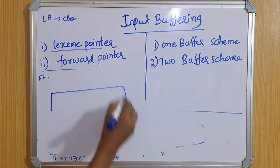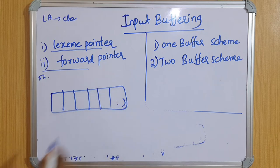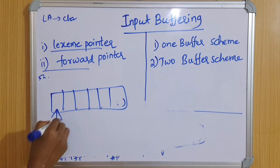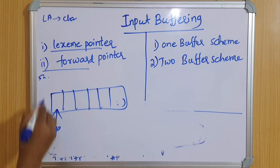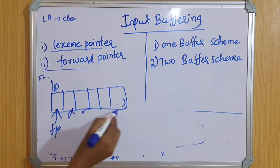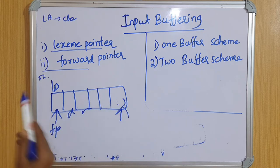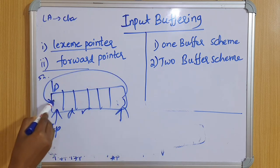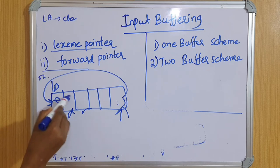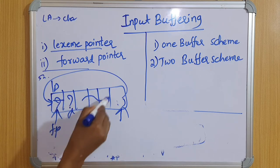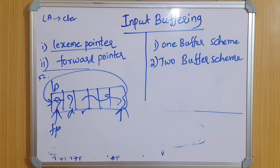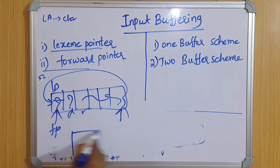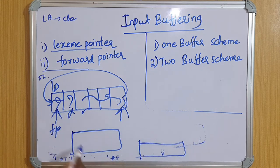In the one buffer scheme, we maintain only one buffer. The forward pointer moves forward; if more space is needed, it comes back. After storing the value, the remaining space in the buffer will be wasted. To overcome this problem, the two buffer scheme is used.